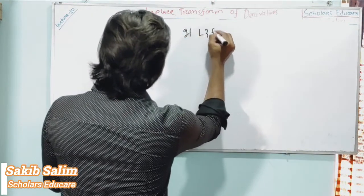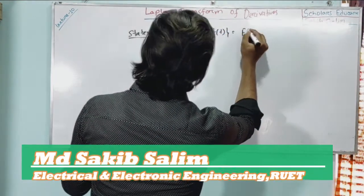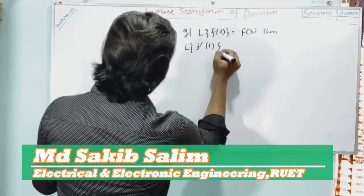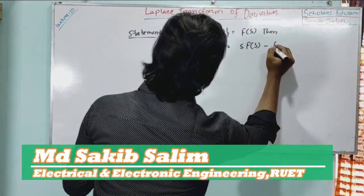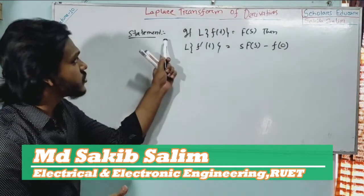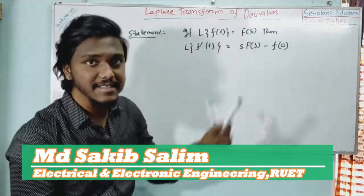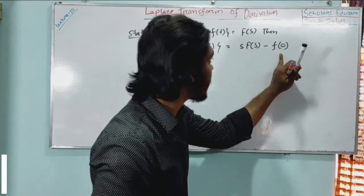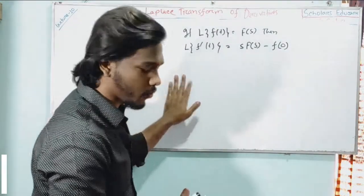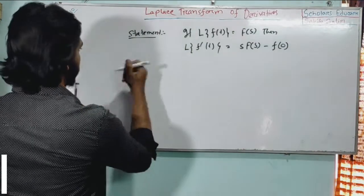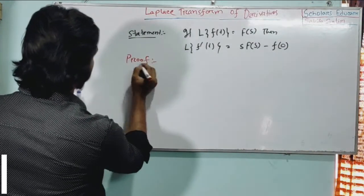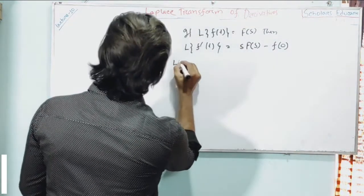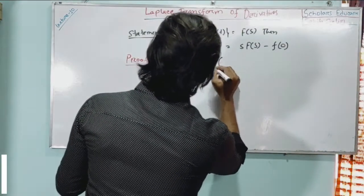If the Laplace Transform of f(t) equals F(s), then we can write that the Laplace Transform of f prime of t equals s·F(s) minus f(0). So the Laplace Transform of f'(t) equals s·F(s) minus f(0).